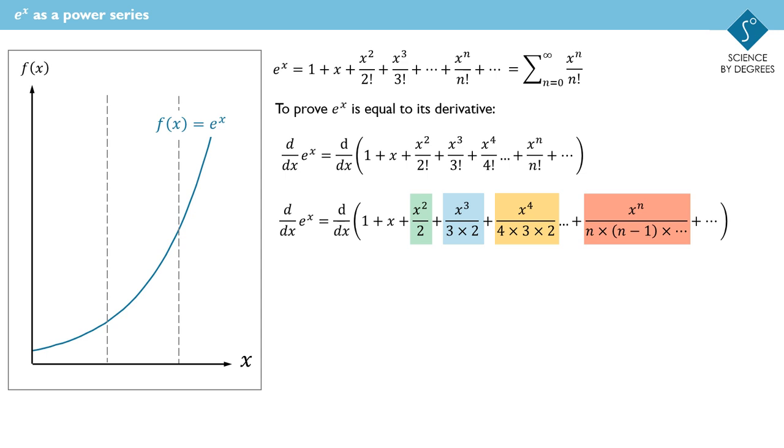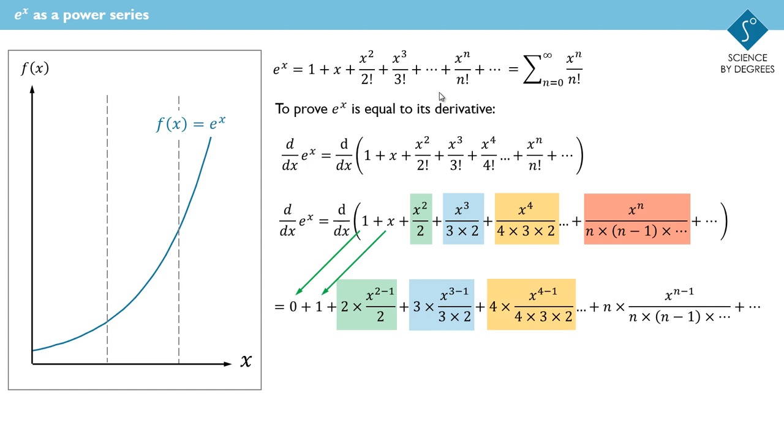So what are we going to do with this? Well here are those terms differentiated. When you differentiate 1, you get 0 because it's constant, it has no rate of change. When you differentiate x, you get 1. When you differentiate x squared over 2, the 2 from the power comes down and cancels out with the 2 in the denominator and the power reduces by 1. For the cubed term, the term gets multiplied by 3 and the power reduces by 1. The x to the 4 term gets multiplied by 4 and the power reduces by 1 and so on.